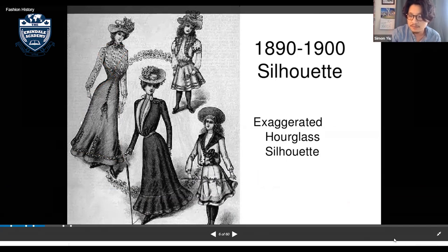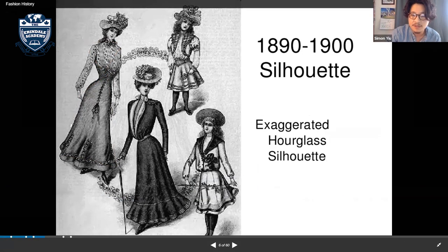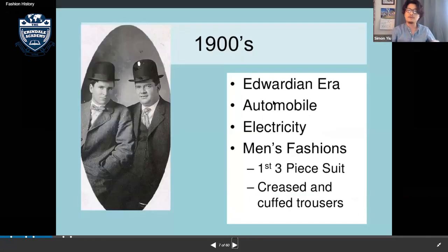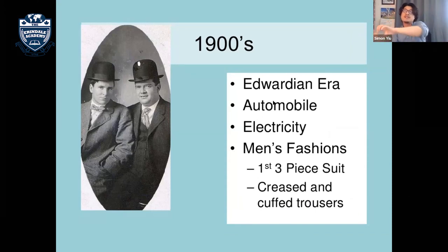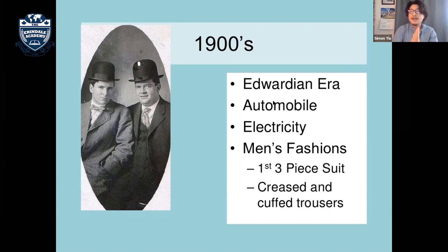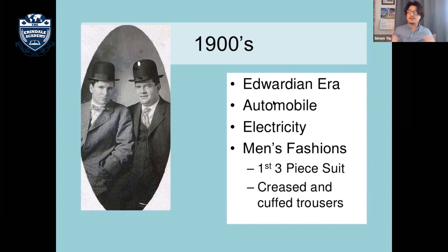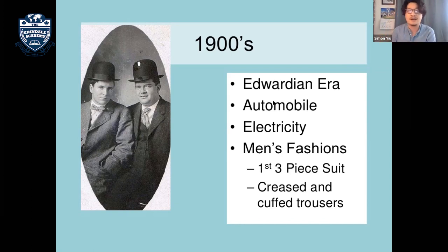In the 1900s it's the Edwardian era — named after Edward, who was Victoria's son. At that time automobiles first appeared and electricity as well. For men's fashion, they had the three-piece suit and crease-and-cuff trousers.